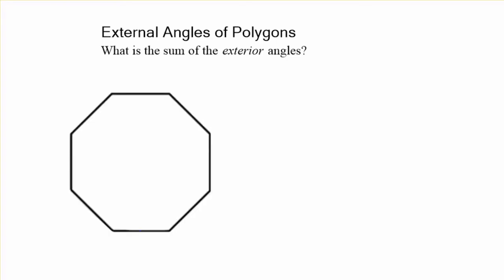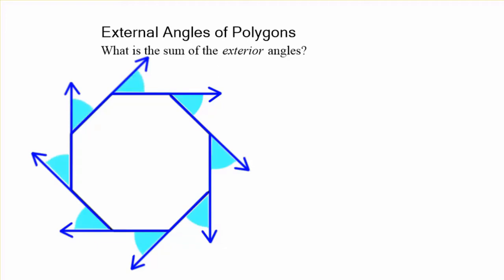We find an exterior angle by extending one of the sides out to make a ray, and then you draw that little angle on the outside of the polygon. Those exterior angles can keep on going all the way around the polygon. I drew them all around clockwise, so you have all eight of those exterior angles.